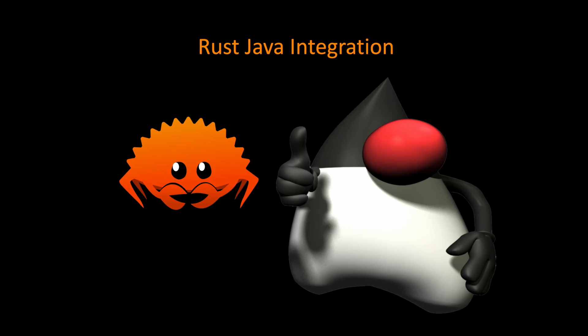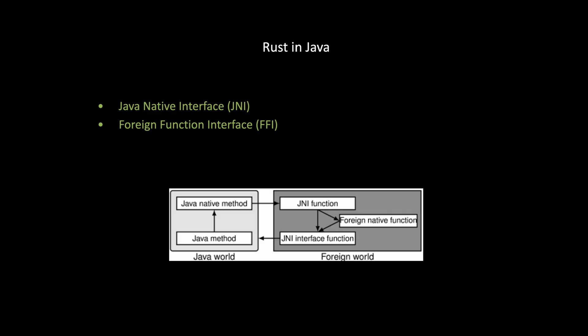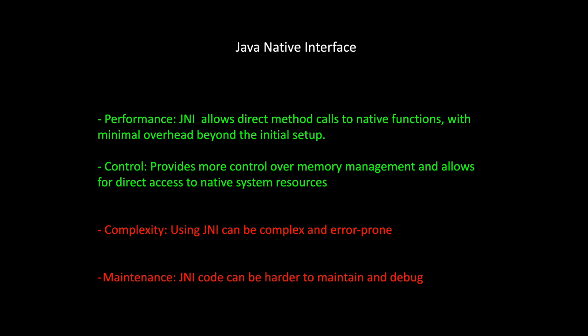Now let's talk about Rust-Java integration — how you can bring Rust code into Java. There are multiple ways, but I'm introducing two: JNI and FFI. JNI, which stands for Java Native Interface, is a JVM built-in capability allowing Java code to interact with non-Java code like Rust, C, or operating system libraries. The other approach uses Foreign Function Interface libraries like JNA and JNR, which are wrappers that also use JNI under the hood but are much easier to use.